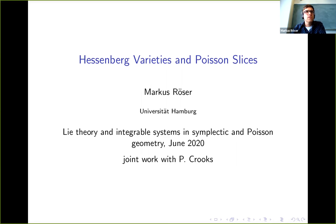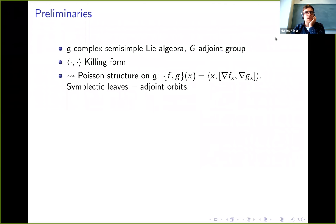Let me remind you quickly about some Lie-theoretic preliminaries. We will always work with a complex semi-simple Lie algebra and G is its adjoint group. Identifying G with its dual using the killing form, we get a Poisson structure on the Lie algebra. As we all know, the symplectic leaves are just the adjoint orbits.